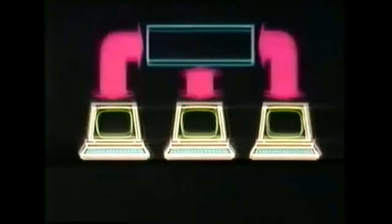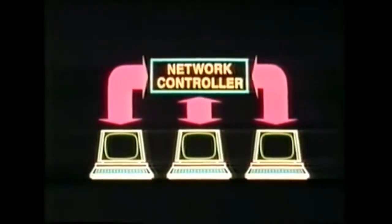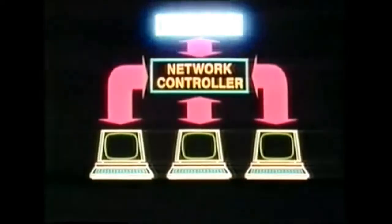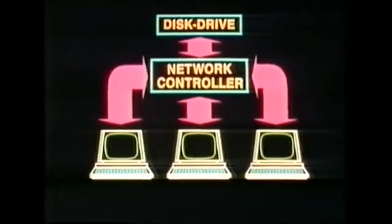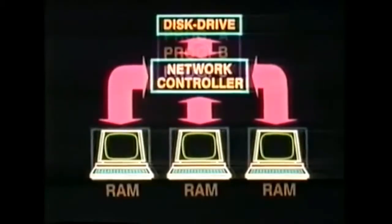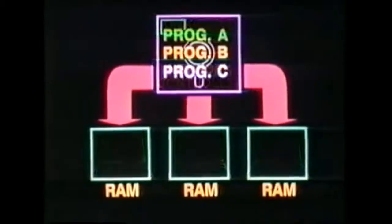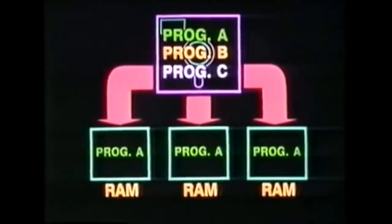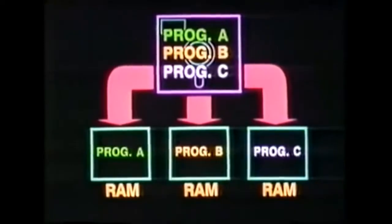The simplest way to link computers together is via a network controller and a disk drive. This enables all the computers to load any of the contents of a single disk into their RAM memories. They can all load the same program, or each of them can load a different program from the same disk.